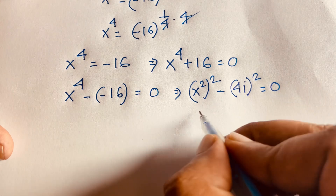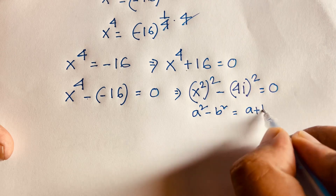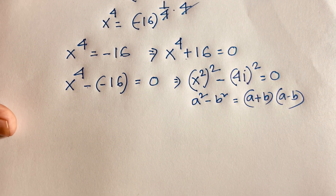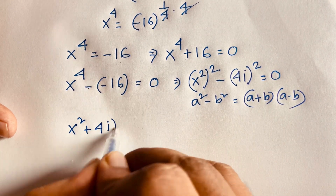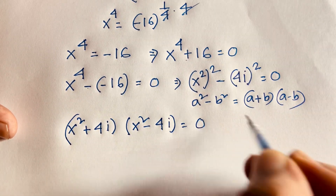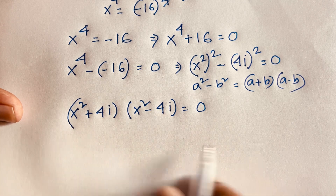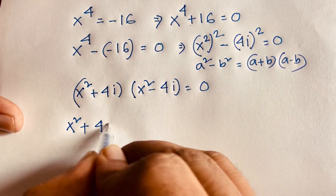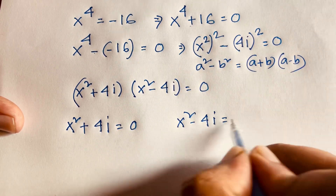Applying the difference of squares formula a² - b² = (a+b)(a-b), the equation factors as (x² + 4i)(x² - 4i) = 0. This gives two cases: Case 1: x² + 4i = 0, and Case 2: x² - 4i = 0.